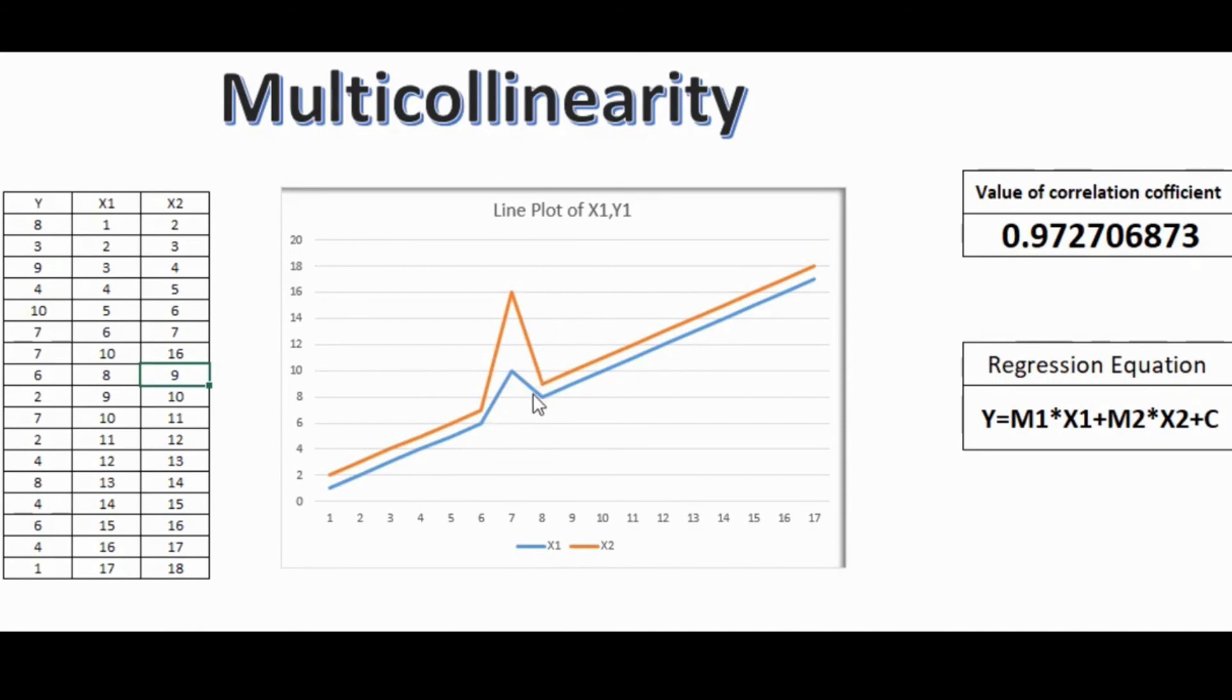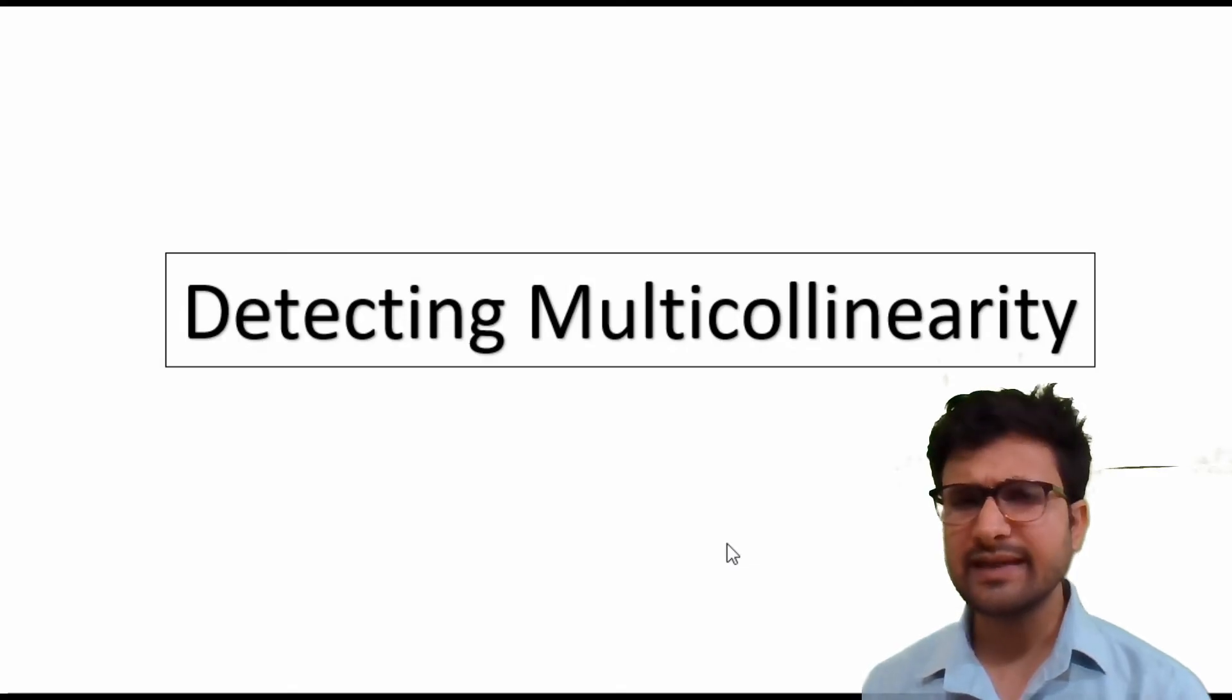Since both the independent variables are correlated and they are providing the same type of information for the regression line, the information gets doubled. We do not need duplicate type of information to fit our regression line, but this will screw up our regression. That's why this multicollinearity assumption exists.